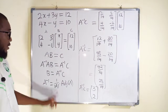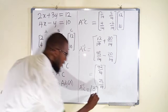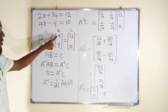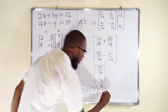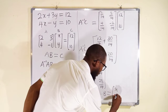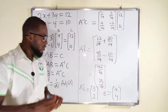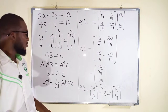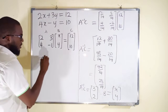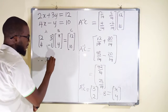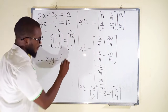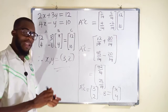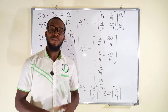This is A inverse multiplied by C, which is the same thing as B. And B is the matrix of X and Y. So by relating these together, you can see that X is equal to 3 and Y is equal to 2. Therefore, the values of X and Y are 3 and 2 respectively. And this is all I have for you today. Thank you for watching, do have a nice day.